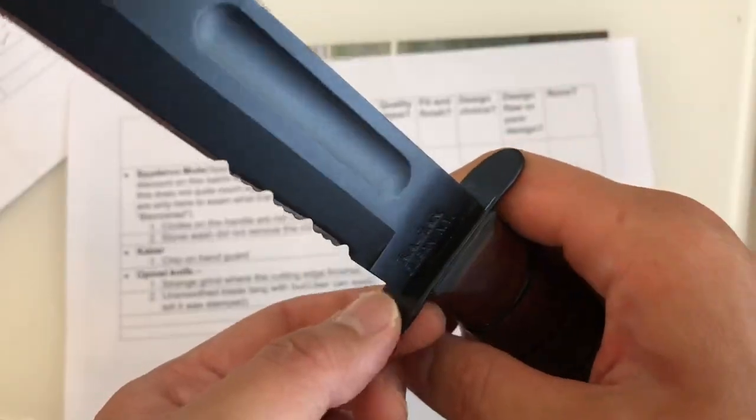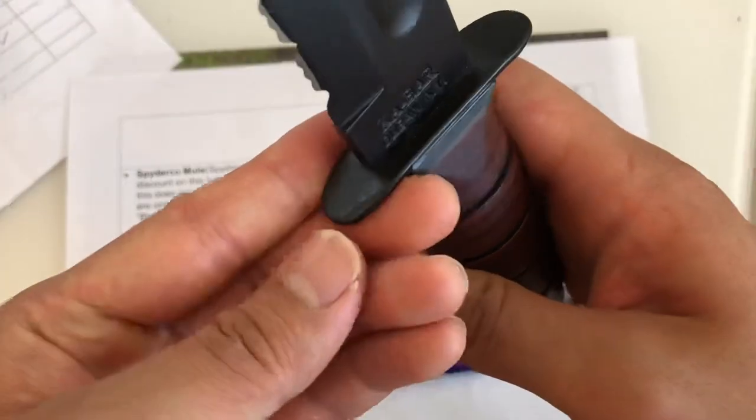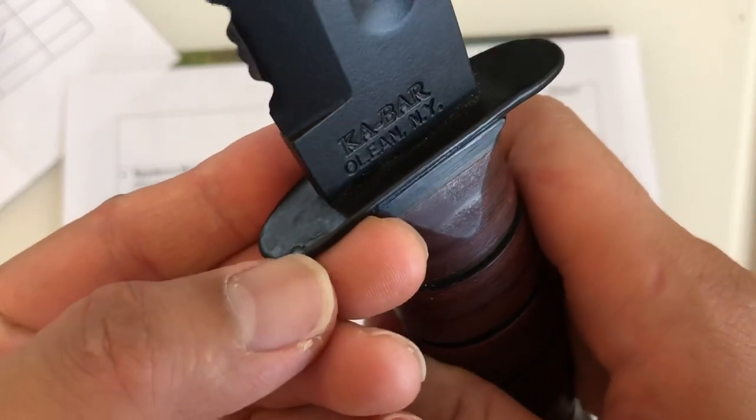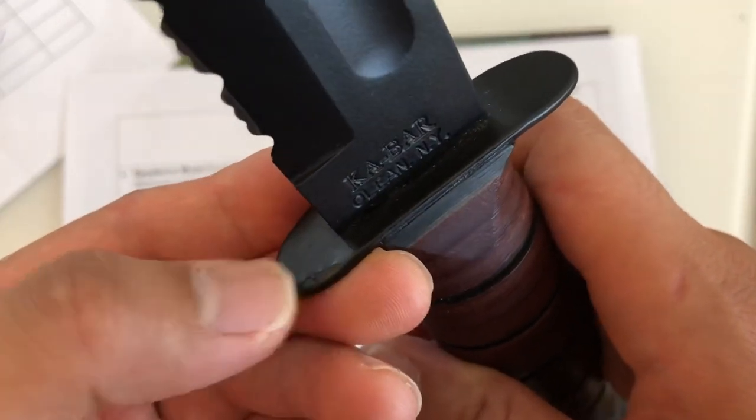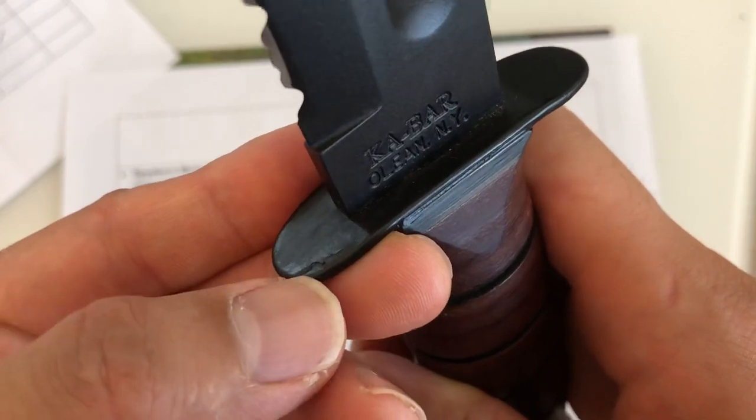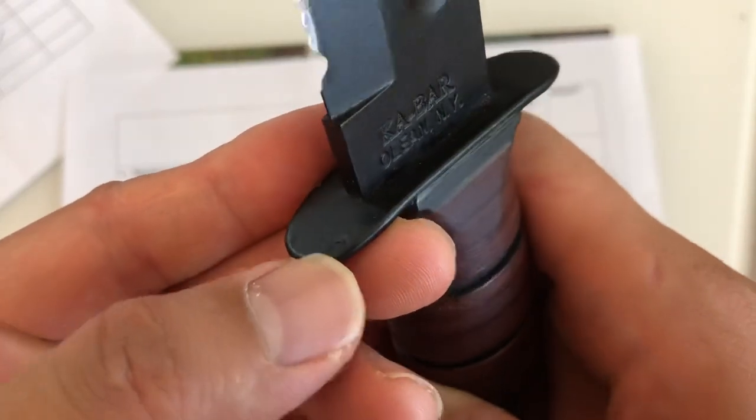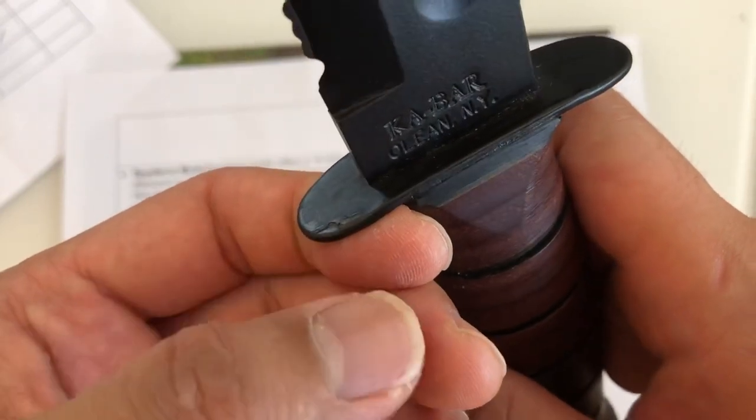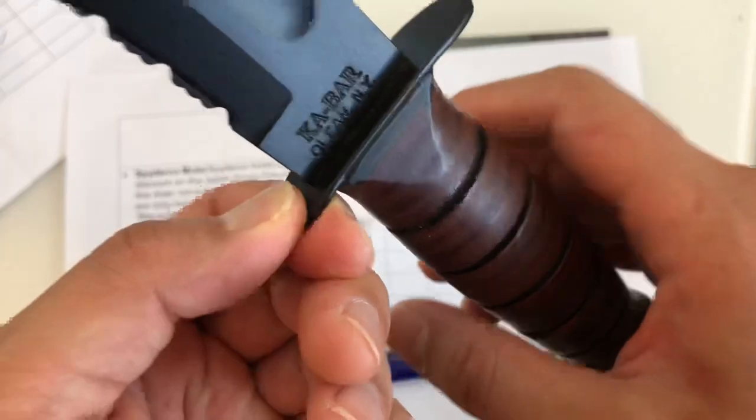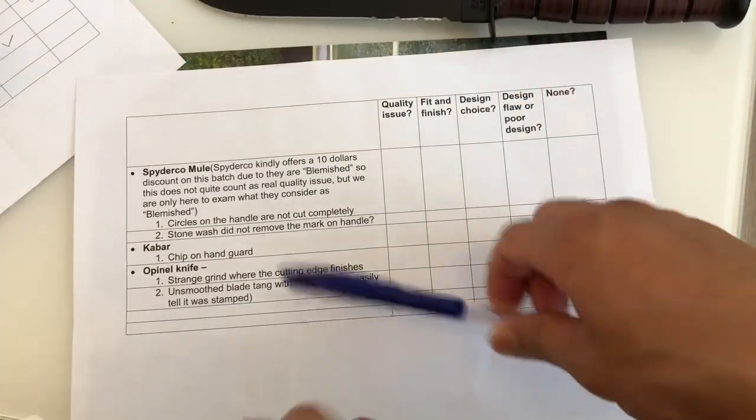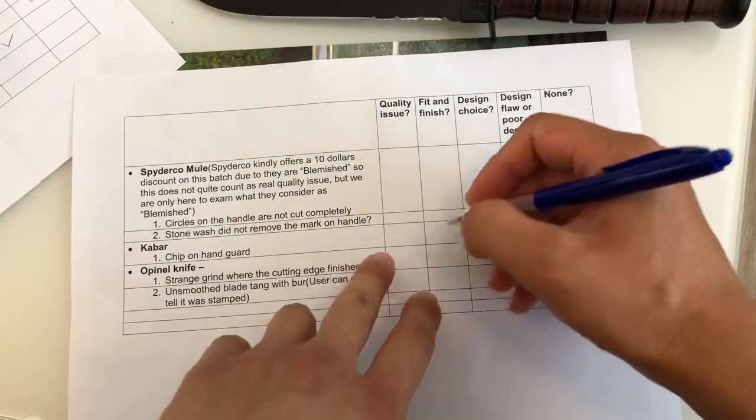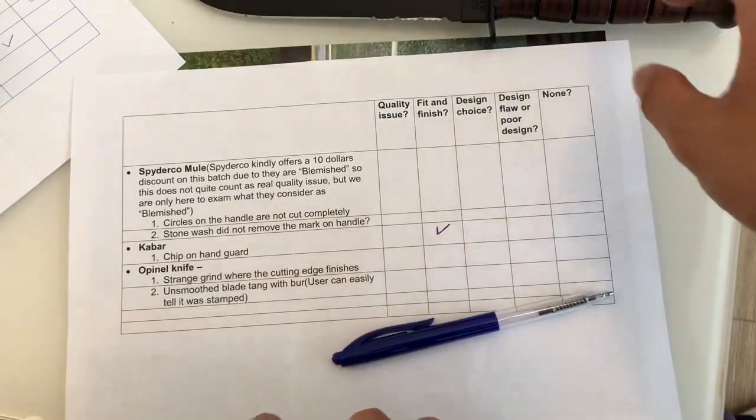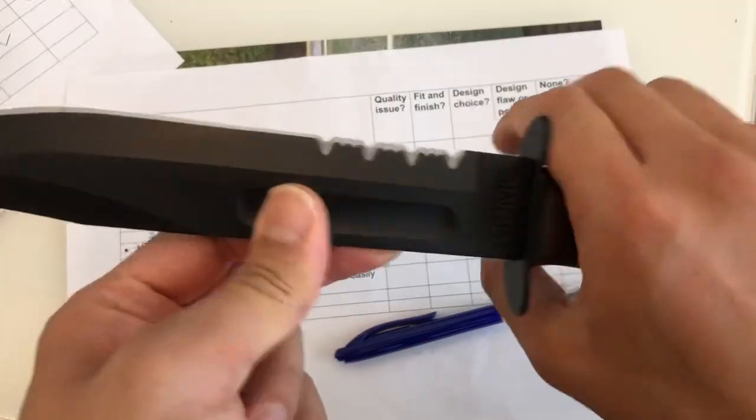The quality issue I had with this knife was over here. So you see it should be smooth on the surface but there's a chip of some kind on the hand guard. I guess it's not visually pleasing but it does not affect the function of the knife. So in my opinion that is actually a fit and finish issue because it doesn't affect how the knife performs.